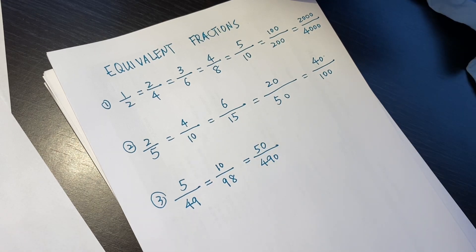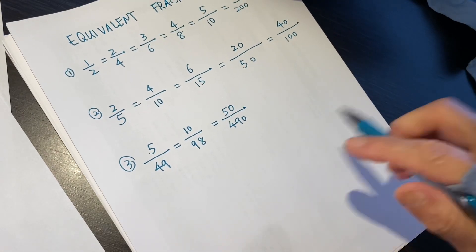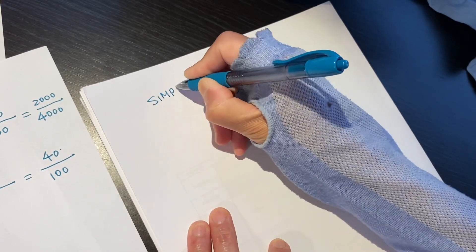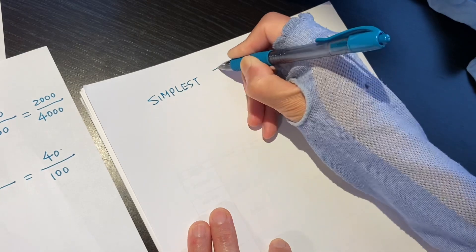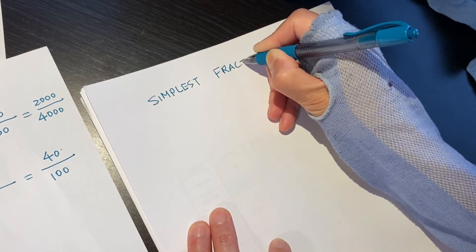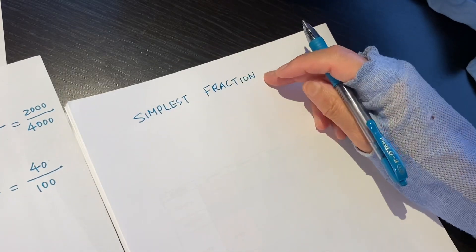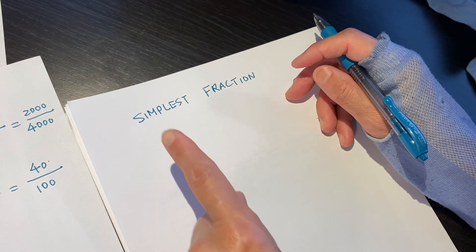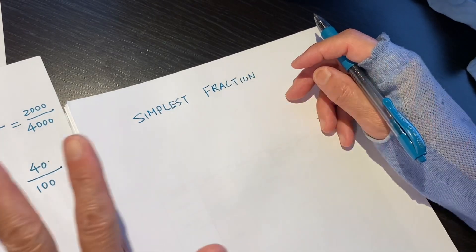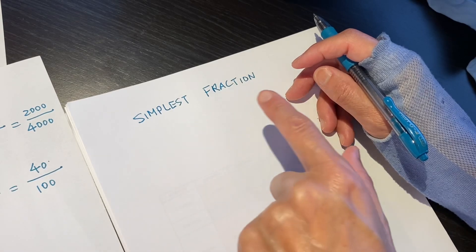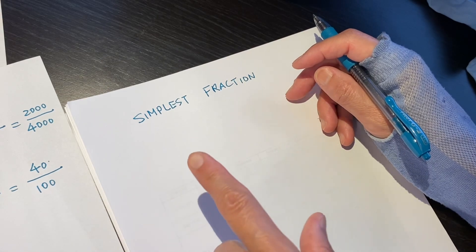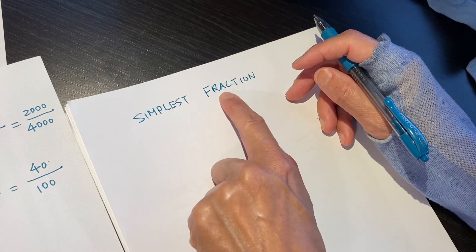So we introduce another concept that is called simplest fraction. It's the simplest — the most simple. No identical, no other thing is the same. So there is only one, and only one simplest fraction.